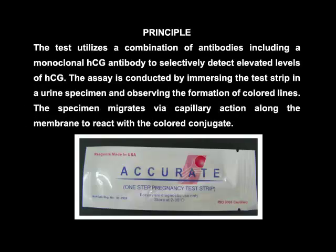Principle. The test utilizes a combination of antibodies, including a monoclonal HCG antibody, to selectively detect elevated levels of HCG. The assay is conducted by immersing the test strip in a urine specimen and observing the formation of colored lines. The specimen migrates via capillary action along the membrane to react with the colored conjugate.